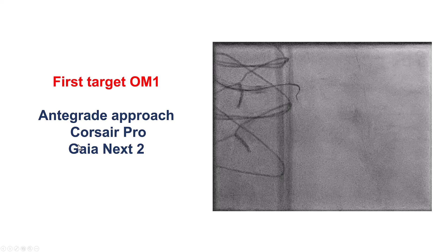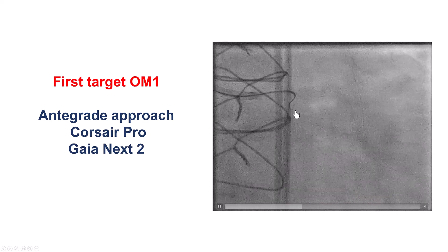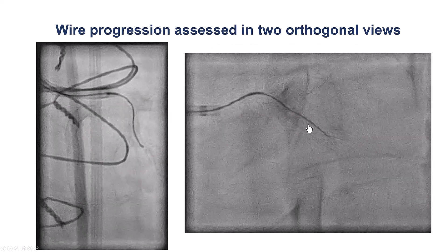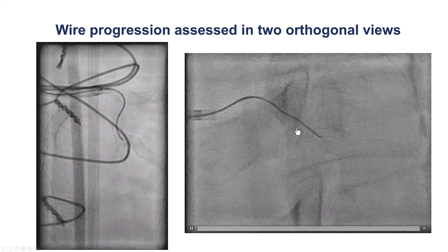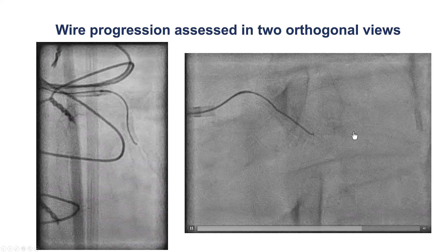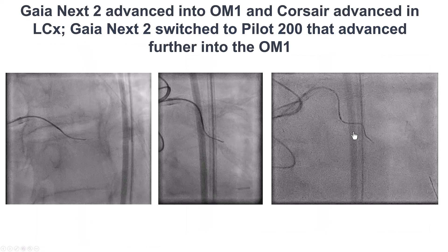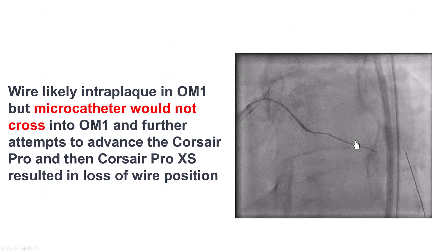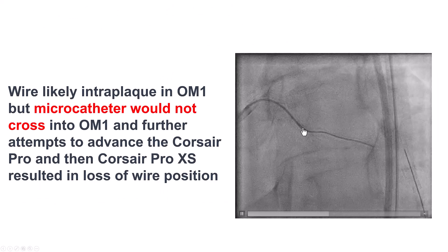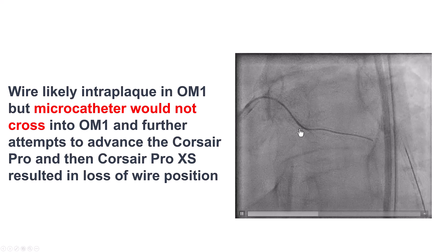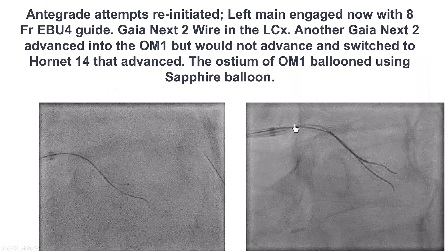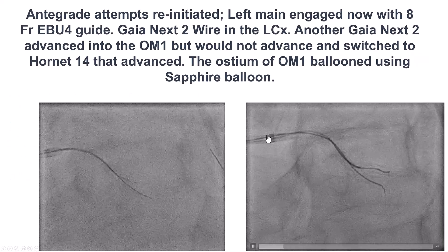We tried to cross antegrade using a Corsair and Gaia Nex 2, making some progress along the course of the previous stent and moving into the obtuse marginal stent. We switched to a polymer-jacketed wire that advanced a little further, but then had difficulty advancing the microcatheter through the first stent into the obtuse marginal stent. Eventually, during attempts to advance, we lost both the wire and guide position, so we started again.